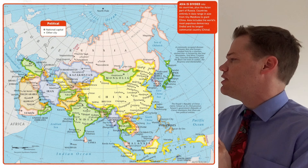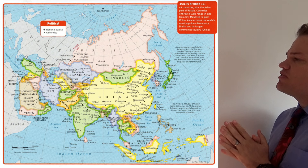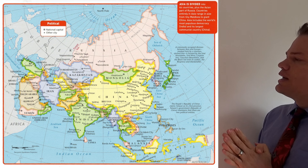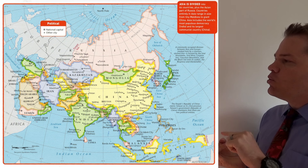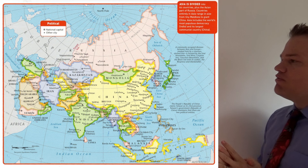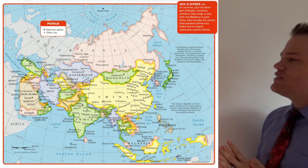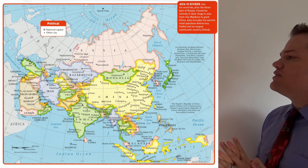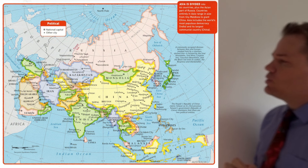Before we do that, I think it's important that we discuss the three main categories of maps. The first category is called the political map, and on your screen you'll see a political map of Asia. The purpose of a political map is to show you countries, states, provinces, counties, the borders of those places, as well as cities. All the countries, as you can see, are different colors.